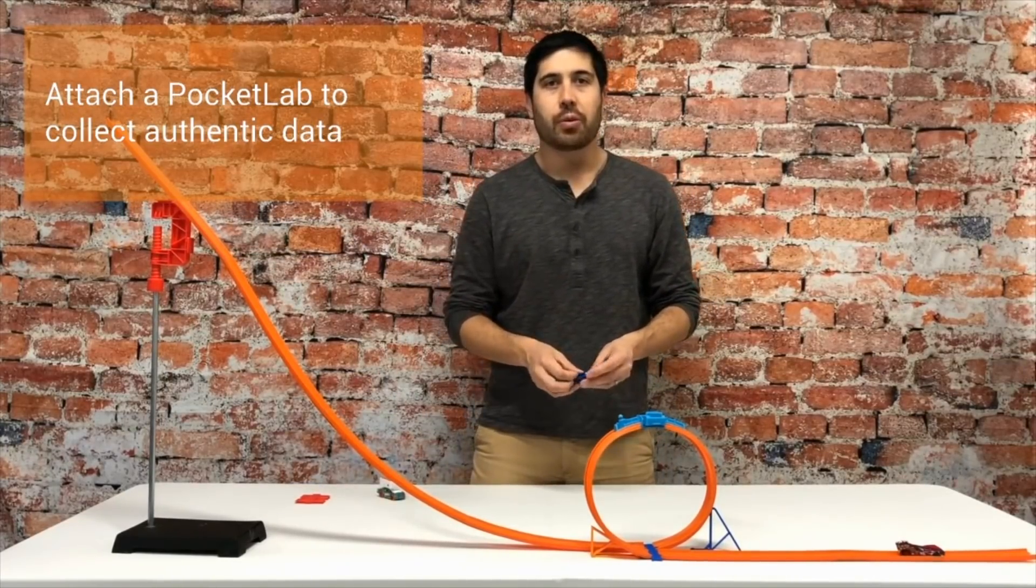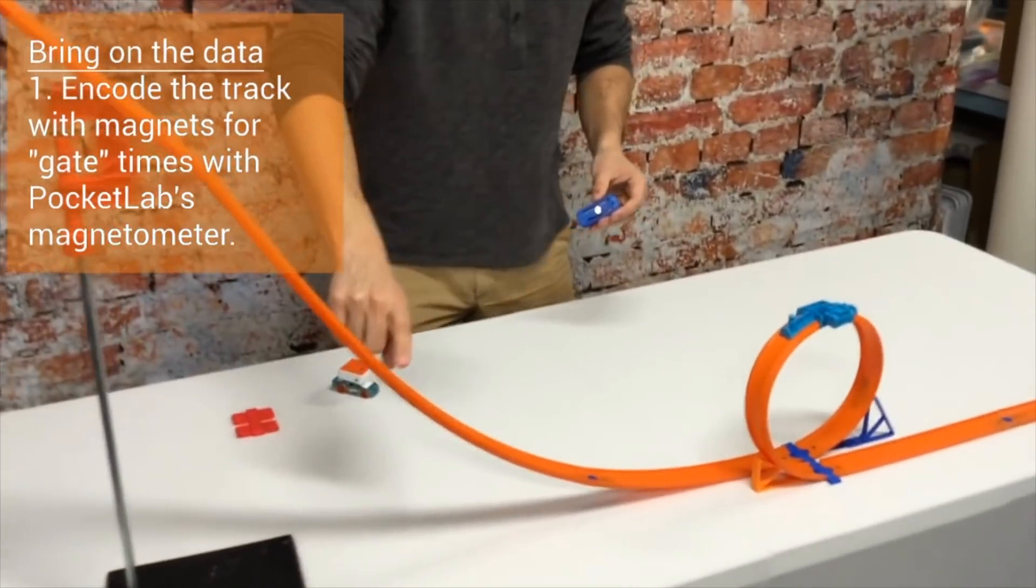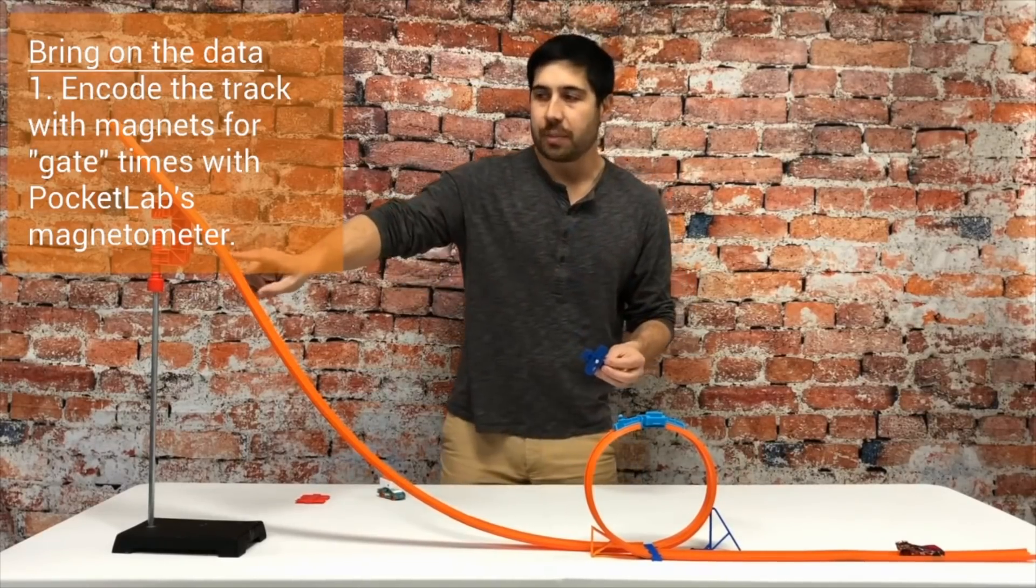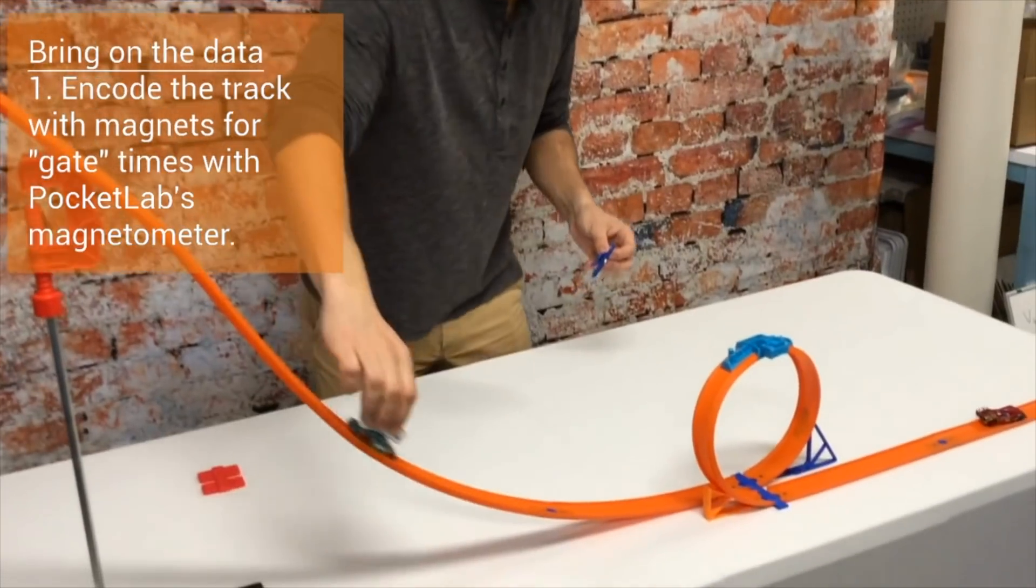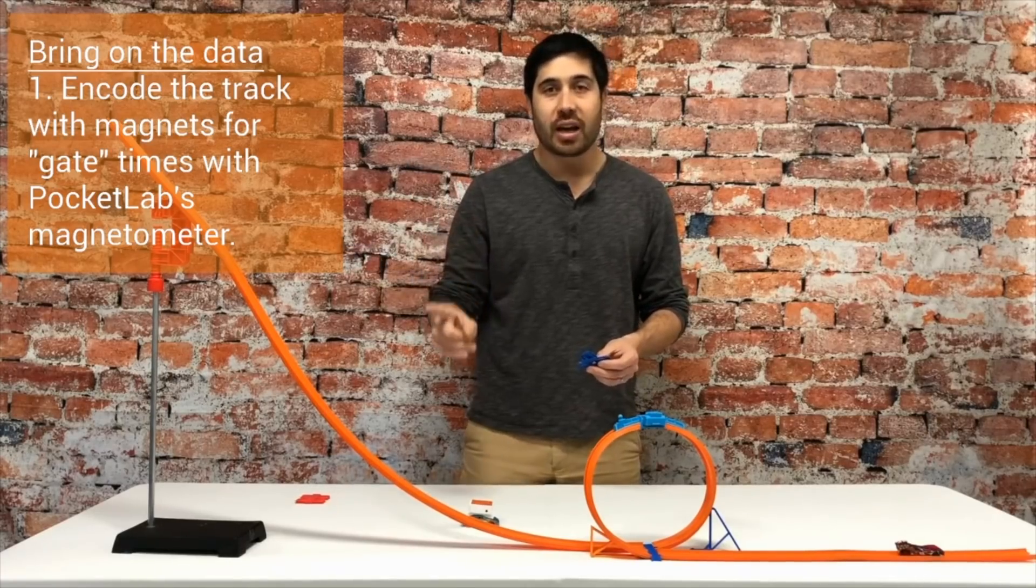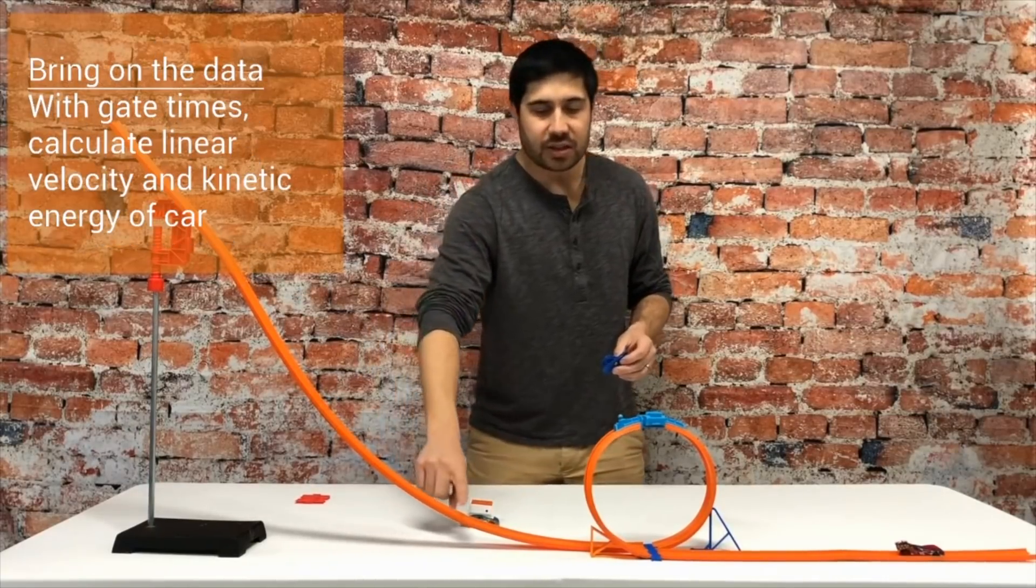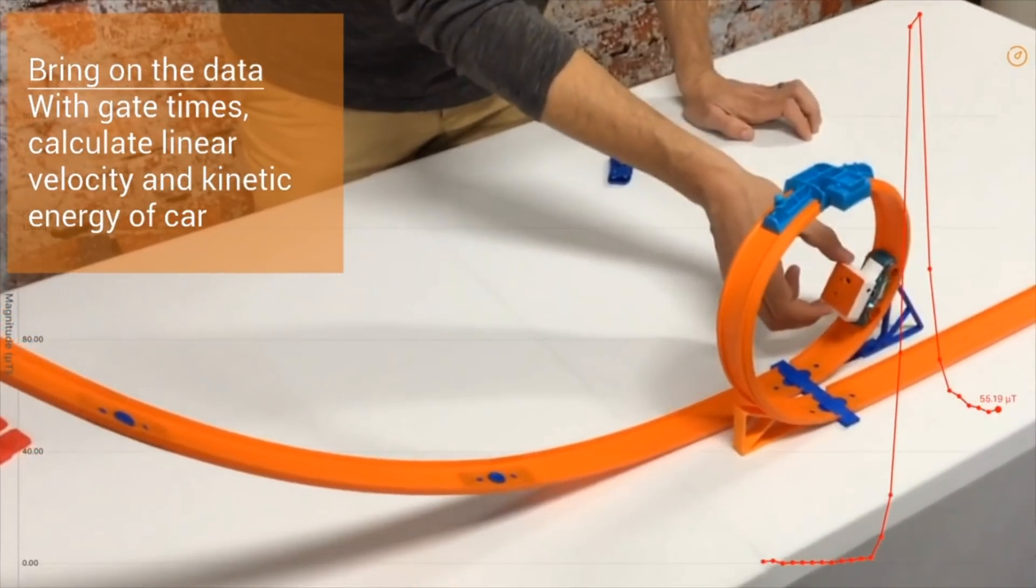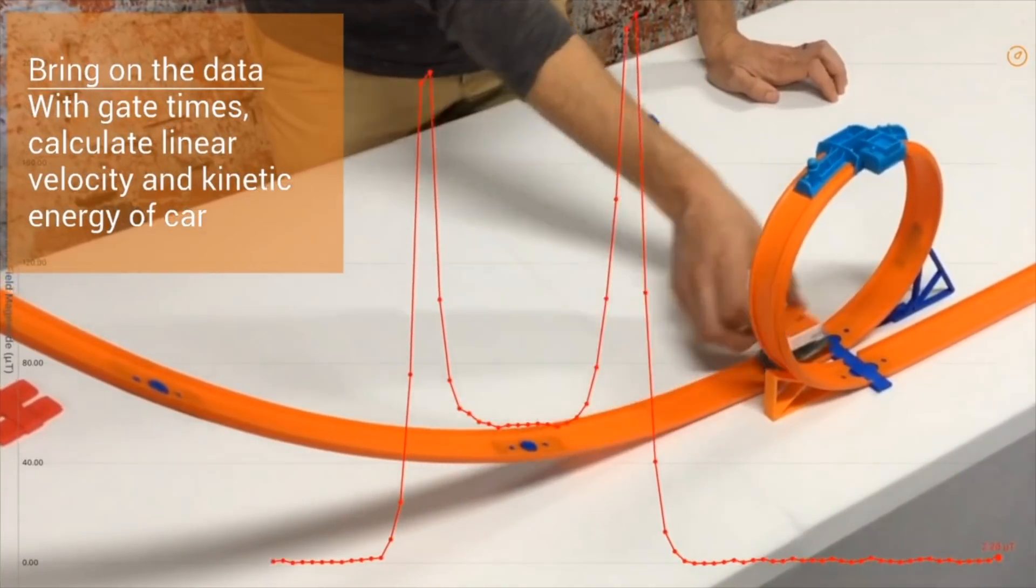The first way that we've come up with is to encode the track with magnets. Under each of these sections, we have magnets on the backside of the connectors. When the Pocket Lab and Hot Wheels car passes over these sections, we can see a change in the magnetic field. Using that magnetic field change and the time, we can come up with timing gates, magnetic timing gates at each of these sections. And knowing the distance that the car has traveled, we can come up with a calculation for the speed of our Hot Wheels car. So that's way one.